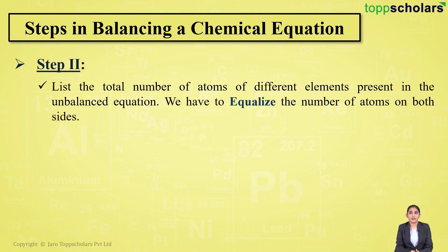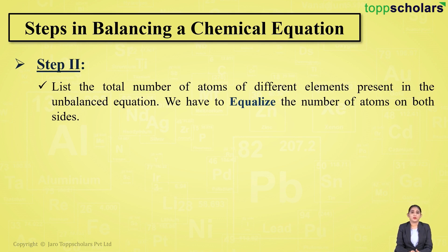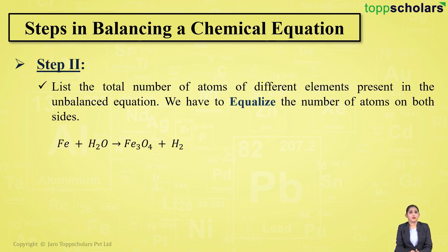We have to equalize the number of atoms present on both sides — that is, the reactant side and the products side. Balancing a chemical equation means the total number of atoms on both sides should be equal. For example, iron reacts with water giving iron oxide and hydrogen.